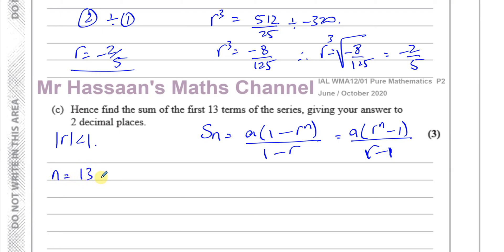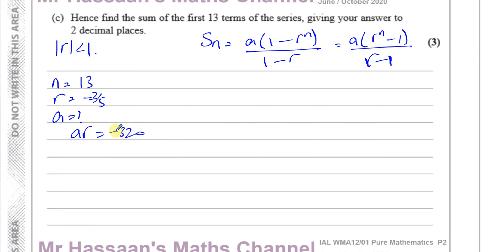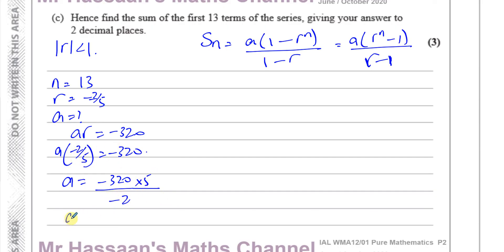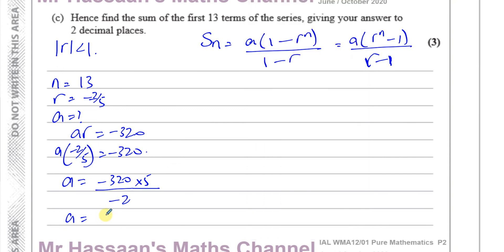We know n = 13 and R = −2/5. We need to find A. From equation 1, AR = −320, and R = −2/5, so A × (−2/5) = −320. Therefore A = −320 ÷ (−2/5) = −320 × (−5/2) = 800. So A = 800.